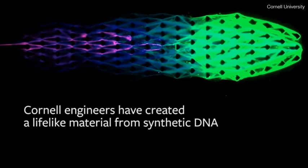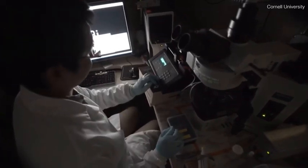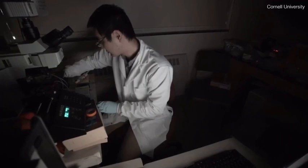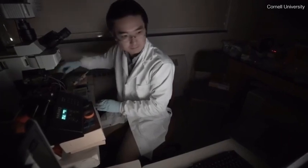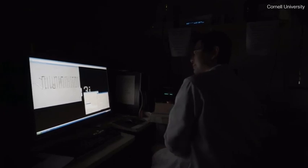Almost all materials are static, like a table or plastic. What we're trying to do is to make materials live. In other words, can we afford lifelike properties to the material, such as metabolic activities — which means they can grow and also at the same time have to be degraded. We can use this artificial metabolism as a kind of engine to create self-generation and regeneration.